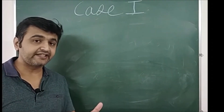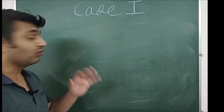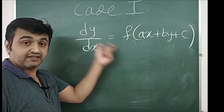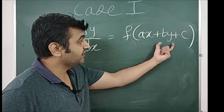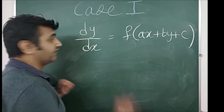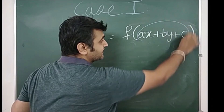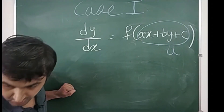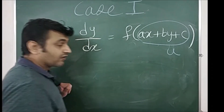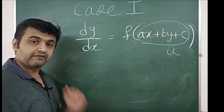Now let me tell you two cases where you can reduce a first order linear differential equation into variable separable form. Case one: whenever you see a differential equation of the form dy/dx = f(ax + by + c), where x and y have degree 1 and a, b, c are real numbers, you can always replace the expression ax + by + c with a new variable u. After doing this substitution, the differential equation in u and x can be solved by the variable separable method.